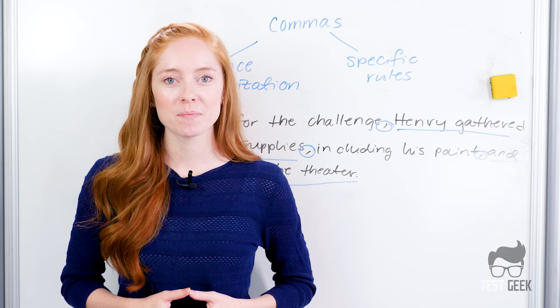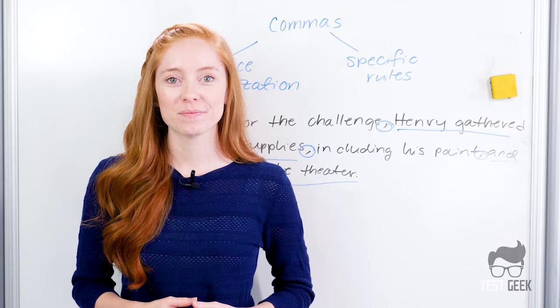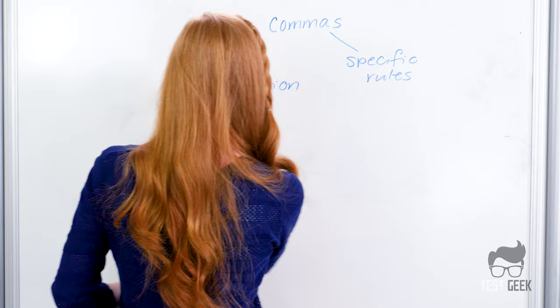Or sometimes it'll be at the end of a sentence, and you'll just have a comma before it and then a period at the end. Or sometimes it'll be in the middle of a sentence, and you'll surround it on both sides with commas. But either way, you want to start from scratch here and then just add additional commas that fit this rule.